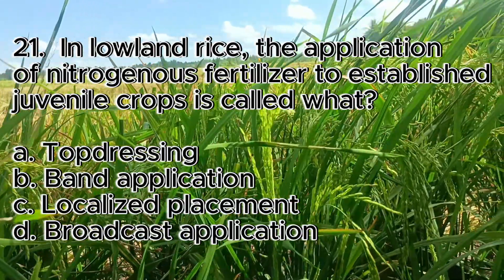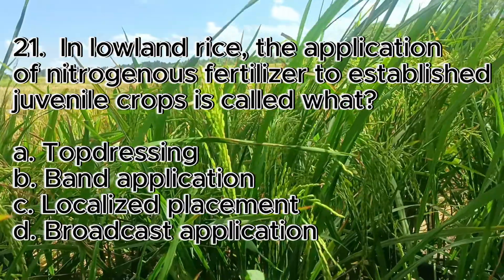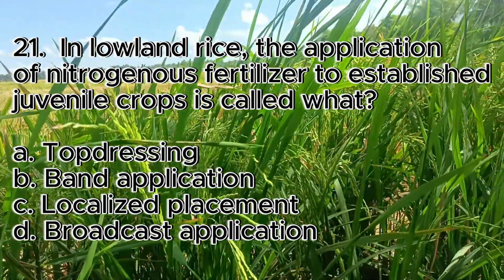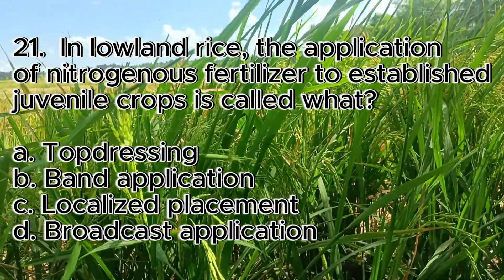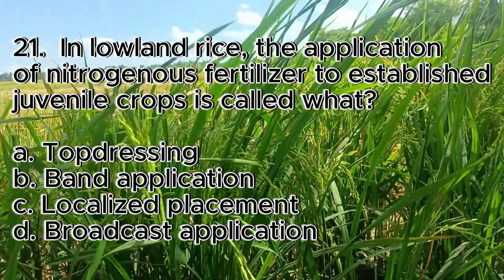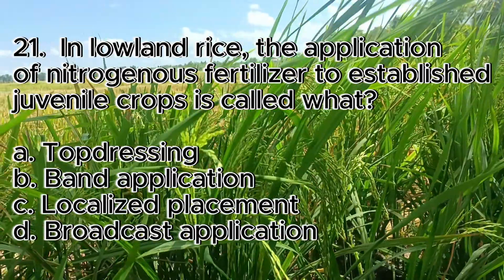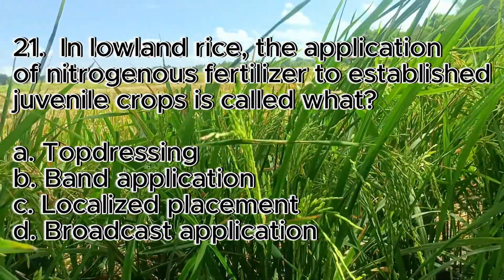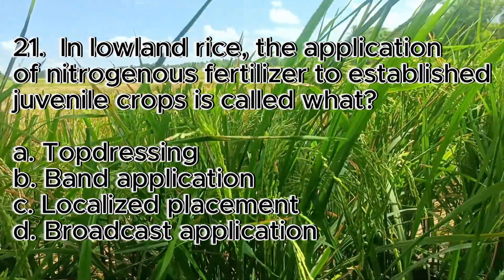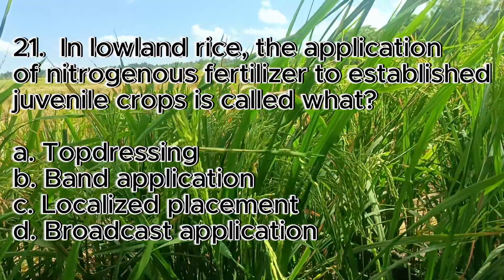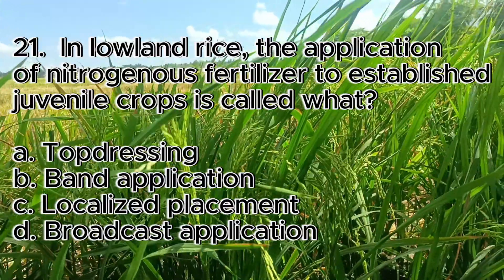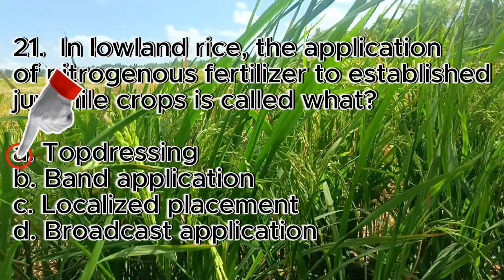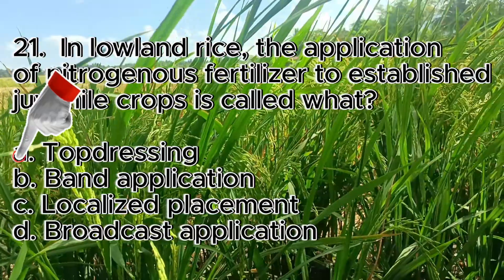Number 21. In lowland rice, the application of nitrogenous fertilizer to established juvenile crops is called what? A. Top dressing, B. Band application, C. Localized placement, D. Broadcast application. The answer is letter A, top dressing.